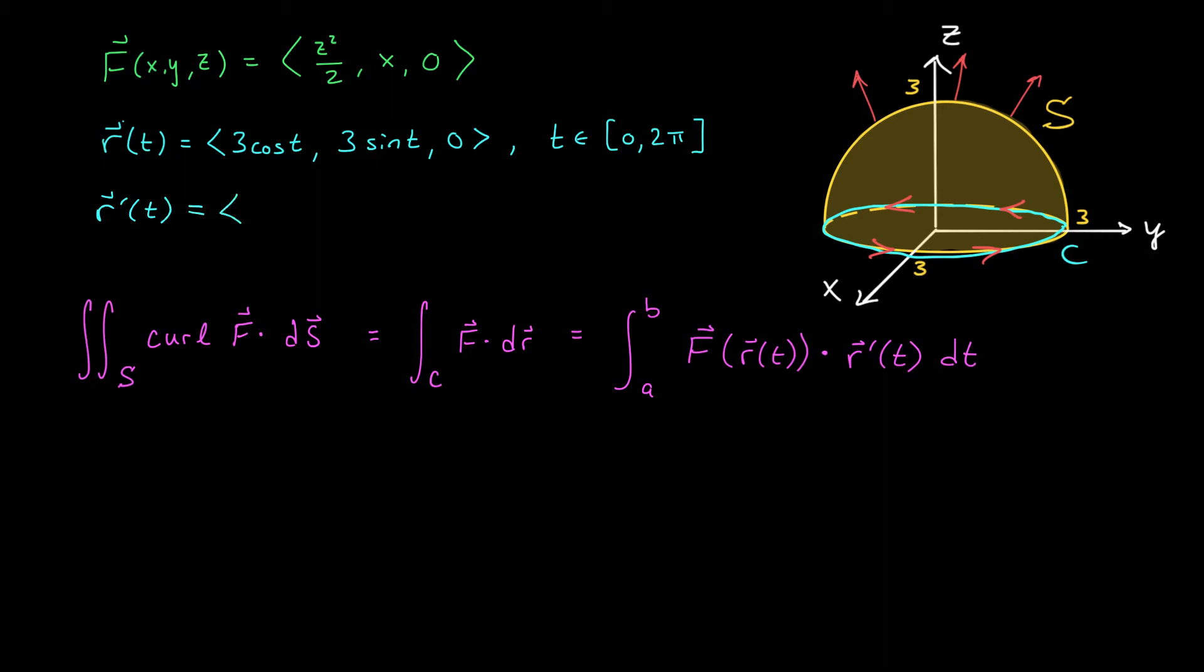So we should probably start by computing R prime. The derivative of R(t) is ⟨-3sin(t), 3cos(t), 0⟩. So this is going to give me the integral along C of F(R(t)). I'm going to replace x, y, and z with these expressions here. That's going to give me ⟨0, 3cos(t), 0⟩, and I'm going to dot that with my derivative.